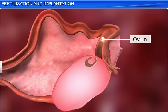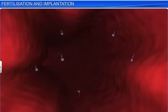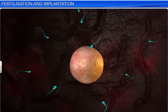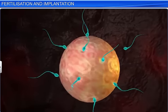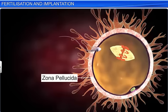The ovum present in the fallopian tube now starts drifting towards the uterus. Once it reaches the ampullary isthmic junction, the ovum gets bombarded by several thousand sperms. However, only one sperm penetrates the zona pellucida and initiates the fertilization process. Moreover, this penetrating sperm induces the zona pellucida to stiffen, which prevents other sperms from entering the ovum.